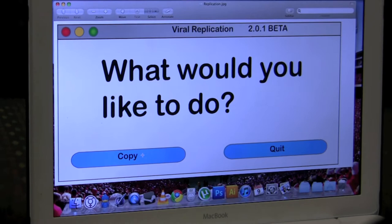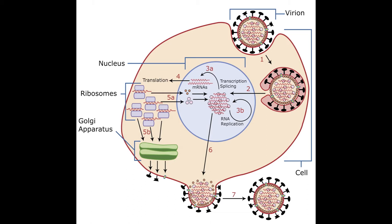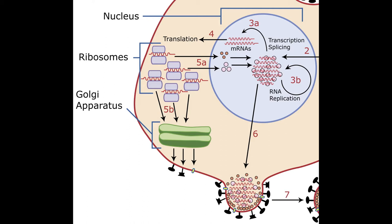Once inside the nucleus, a virus replicates its genome by first synthesizing viral messenger RNA, or mRNA, through transcription. Next, viral mRNA leaves the nucleus and through translation creates new viral proteins.